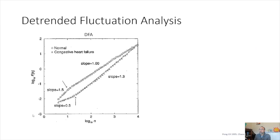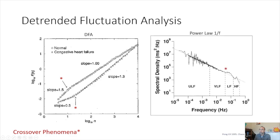When C.K. Peng applied DFA to normal and congestive heart failure patients, he found an interesting observation. The DFA graph maps fluctuation with respect to scale. Comparing a normal individual's graph versus congestive heart failure individuals, he observed what he termed the crossover phenomenon — a change in slope — which occurred in both groups but in different ways.